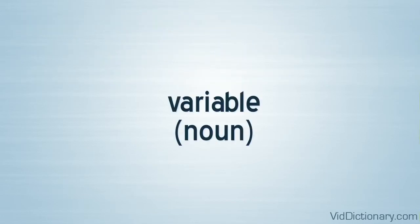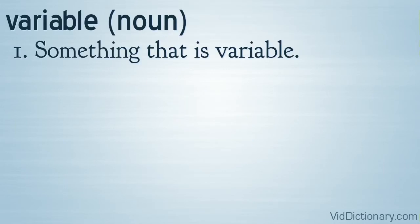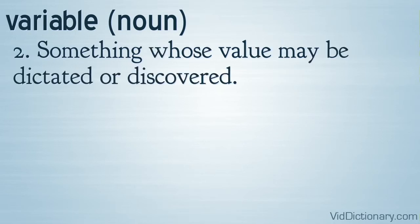Part of speech: noun. Six definitions. Definition 1: something that is variable. Definition 2: something whose value may be dictated or discovered.